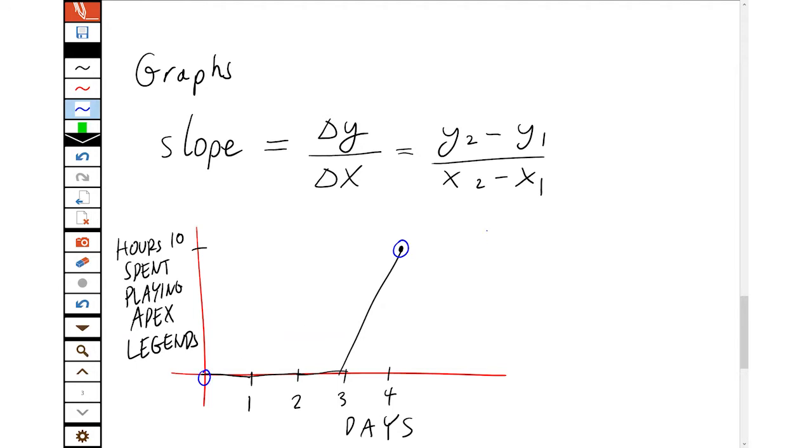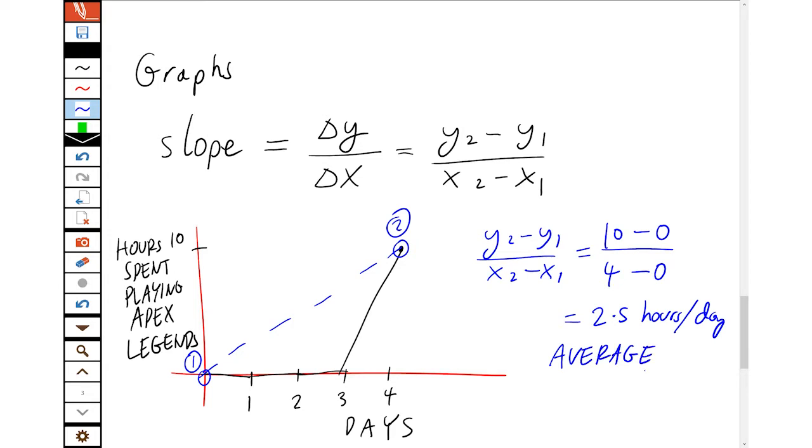So if we were to look over the whole period between here and here, what do I have? I have the new value minus the old. So that's 10 hours minus zero over the fourth day minus the zero day. So that's 2.5 hours per day, which sounds pretty good and pretty fun. But you can see that's not actually what happened. That's the average between the second point and the first point. So it's a useful value, but that's not actually what happened. So that's the average value.